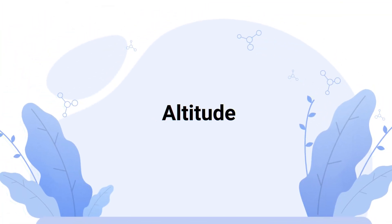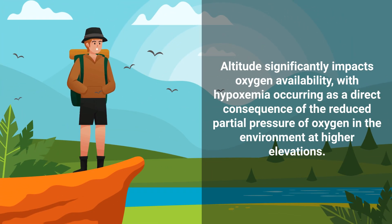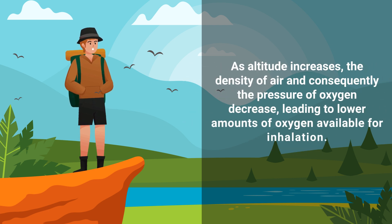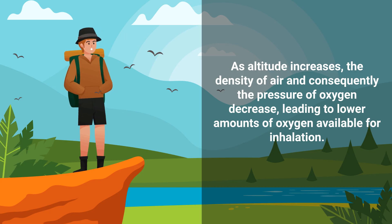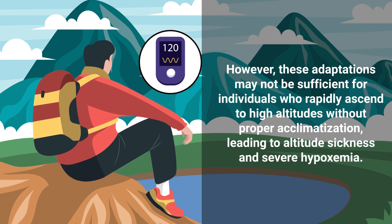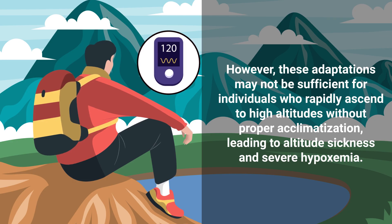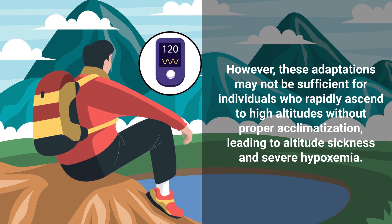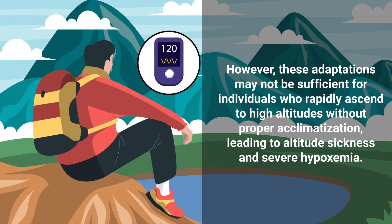Number 5, altitude. Altitude significantly impacts oxygen availability, with hypoxemia occurring as a direct consequence of the reduced partial pressure of oxygen in the environment at higher elevations. As altitude increases, the density of air and consequently the pressure of oxygen decrease, leading to lower amounts of oxygen available for inhalation. The body attempts to compensate through mechanisms such as increased breathing rate and enhanced production of red blood cells to improve oxygen transport. However, these adaptations may not be sufficient for individuals who rapidly ascend to high altitudes without proper acclimatization, leading to altitude sickness and severe hypoxemia.